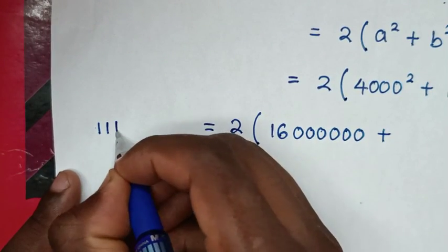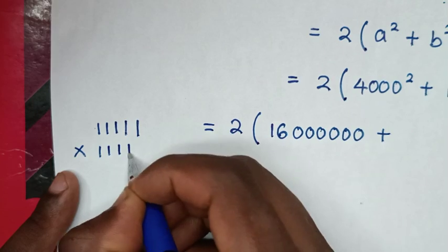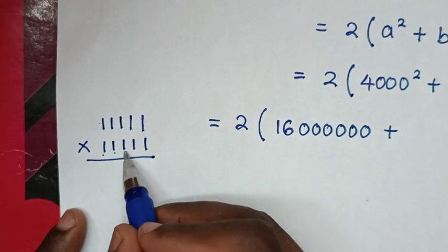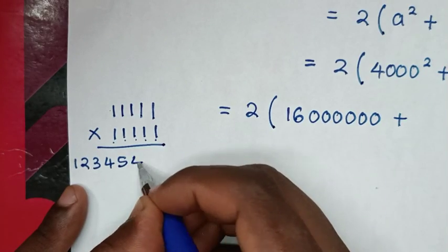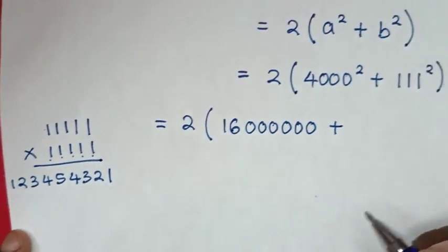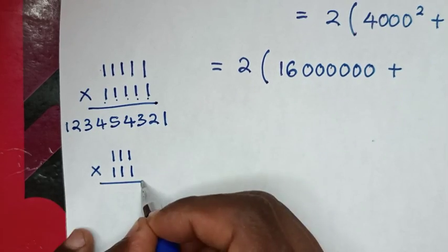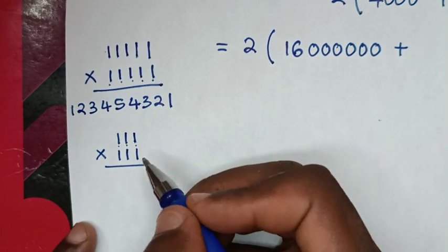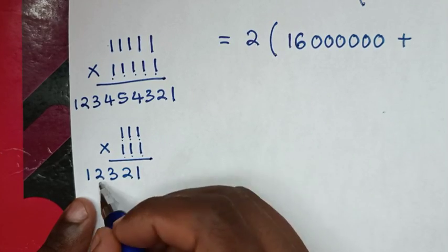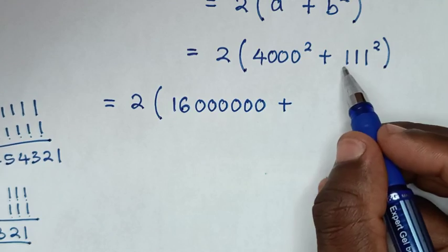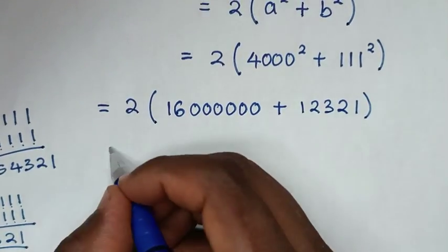For 111², we can use a trick: for a repunit number like 12345 times 12345, the result goes ascending then descending. Since 111 has 3 digits, 111² = 12321. So we now have 2 times (16,000,000 + 12321).